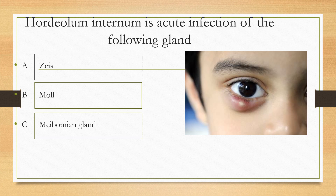Next question. A hordeolum internum is an acute infection of which of the following glands? Options are: option A Zeis gland, option B Moll gland, option C meibomian gland. The answer is meibomian gland, whereas a hordeolum externum involves the Zeis gland and hordeolum internum involves the meibomian gland.